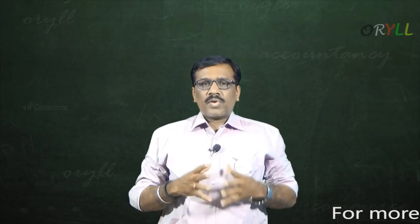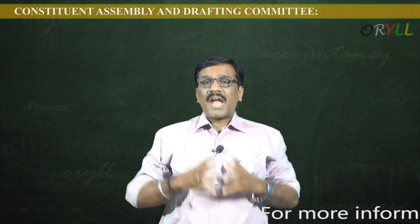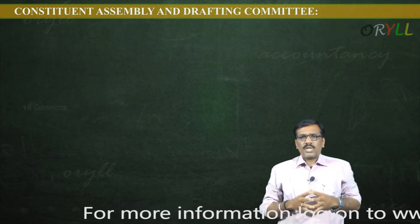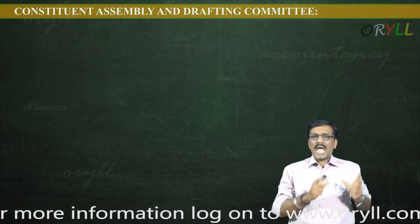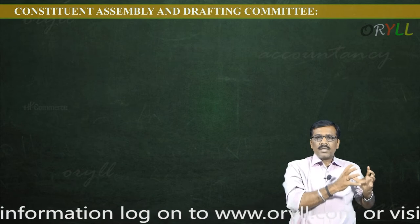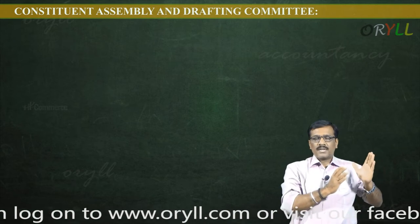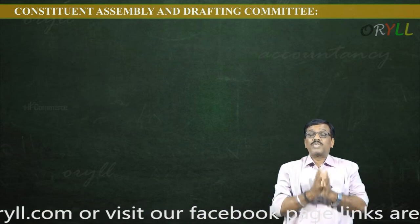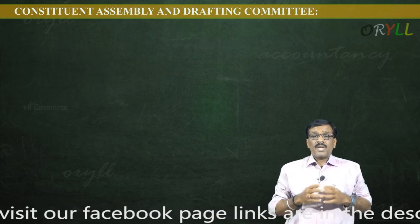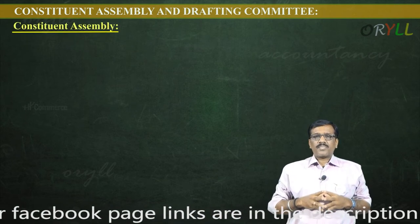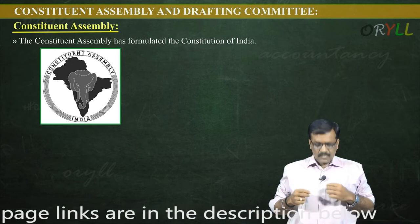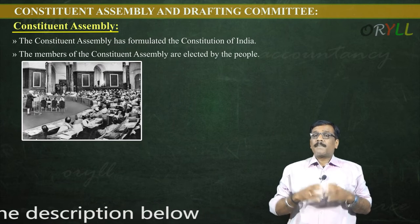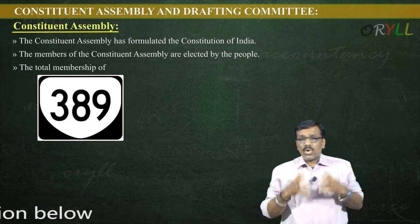We are going to discuss about the Constituent Assembly and Drafting Committee. In order to make or frame a constitution, you should have a Constituent Assembly with elected members. We have 22 committees, but we are focusing on the Drafting Committee as it is very important. The Constituent Assembly formulated the Constitution of India, with members elected by the people.